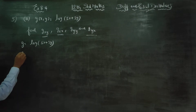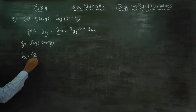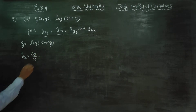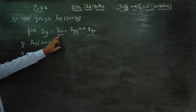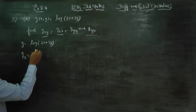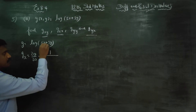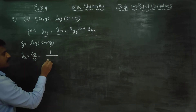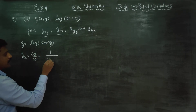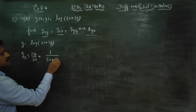First of all, I will find the partial derivative with respect to x. It is the meaning of ∂g/∂x. For partial differentiation, differentiate the log term: log differentiate gives 1 by (5x plus 3y).